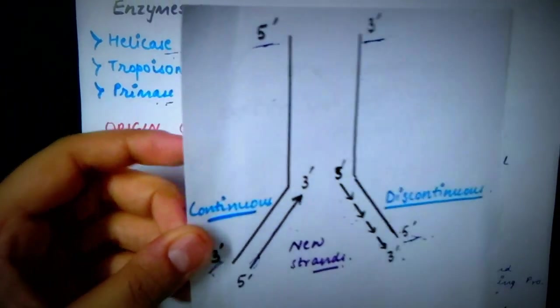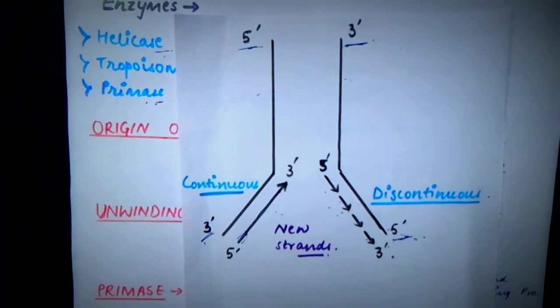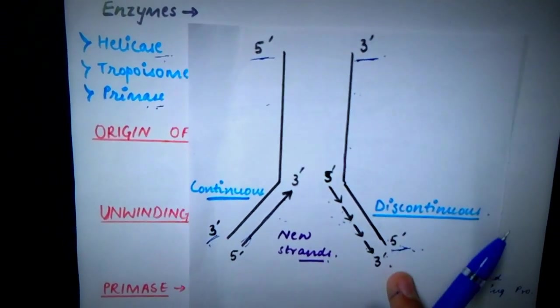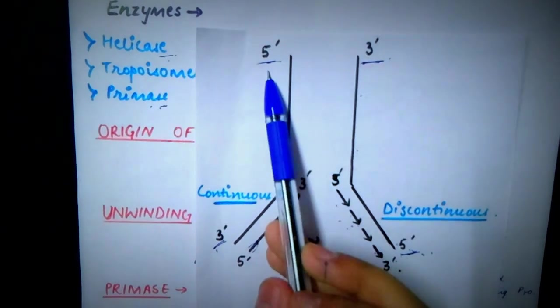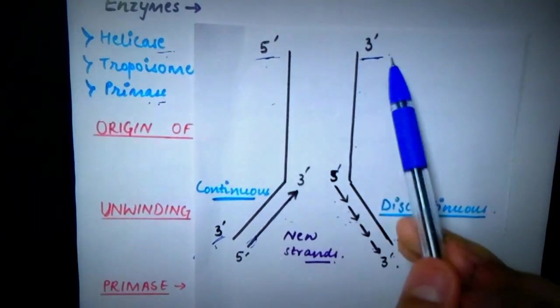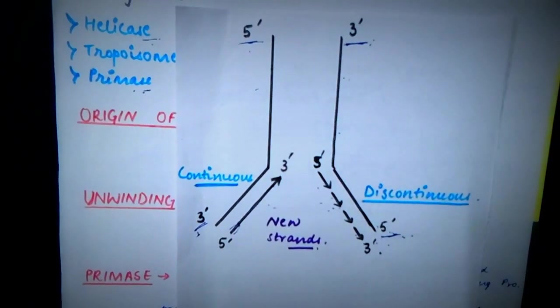Now, this is the diagrammatic representation of the replicating fork. These are the two parental strands of the DNA, and these are arranged in the anti-parallel fashion. Here we have the 5' end. Here we have the 3' end. And opposite to 5' we have 3' and opposite to 3' we have 5' end.